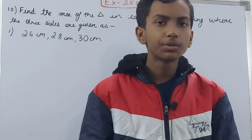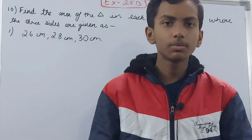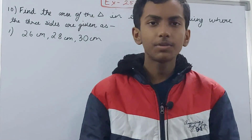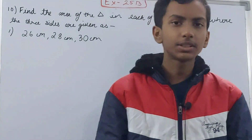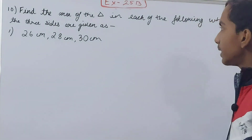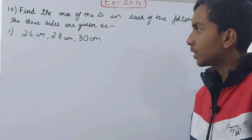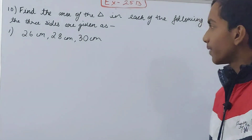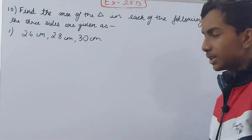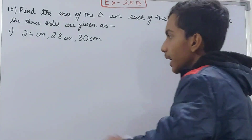Hello friends, welcome back to my YouTube channel. In this video we are going to solve ICSE Mathematics Class 8, Chapter 25, Area of Rectilinear Figures, Exercise 25B, Question 10. It says: find the area of the triangle in each of the following where the three sides are given. The first triangle has sides 26 centimeters, 28 centimeters, and 30 centimeters.